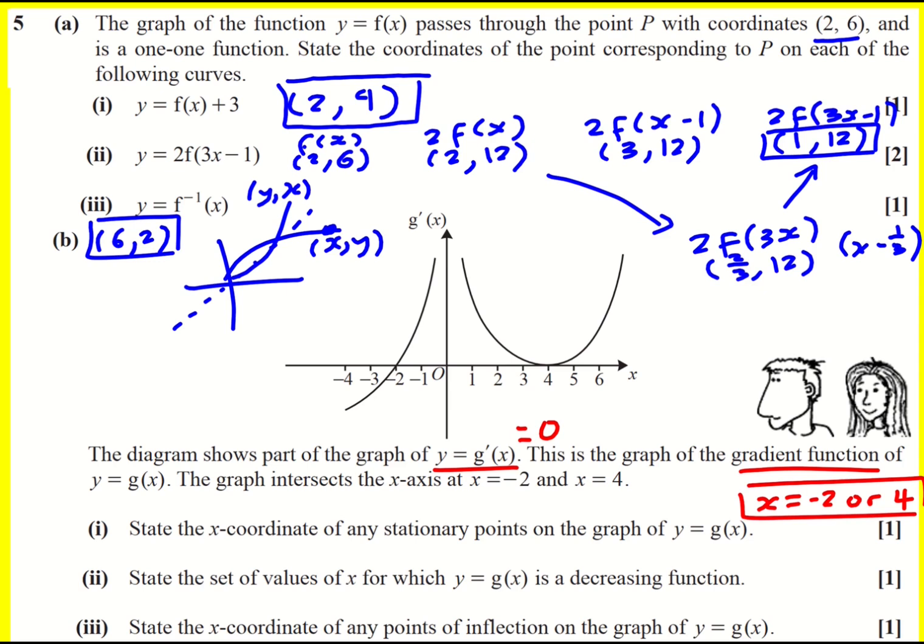We're then asked to state the set of values for which y equals g of x is a decreasing function. So for this we require, and again, let's write it in terms of g dash x. For a decreasing function, g dash of x is less than zero. And I can look at my graph, and it's just here. It's very important - it's not where the gradient is now negative, because we're plotting the actual gradient function. It's where the gradient function itself is below the x axis. So the answer is going to be x is less than minus two.